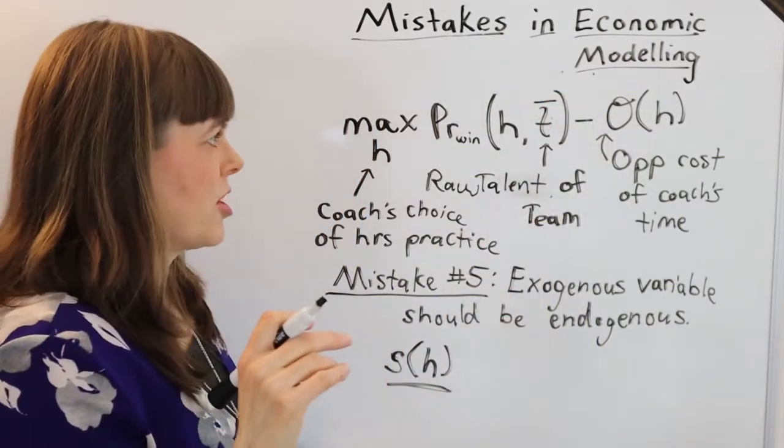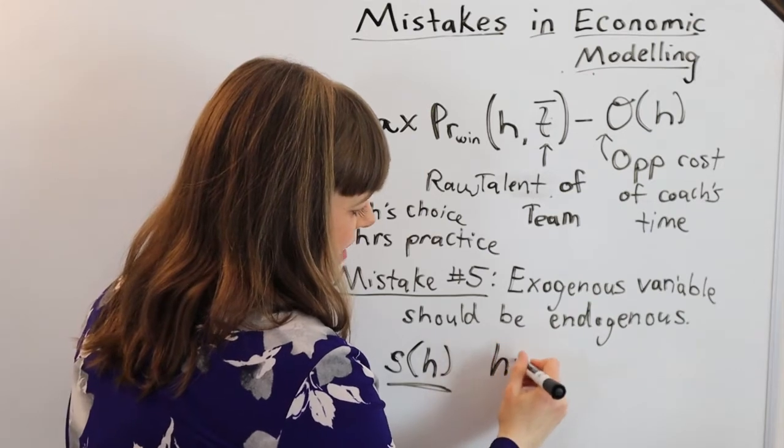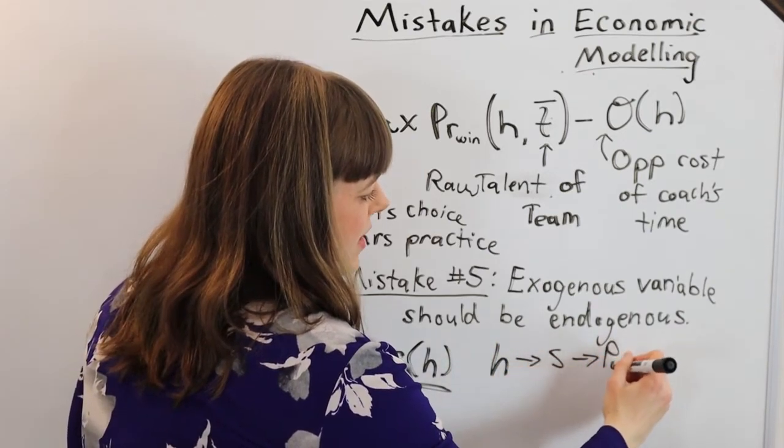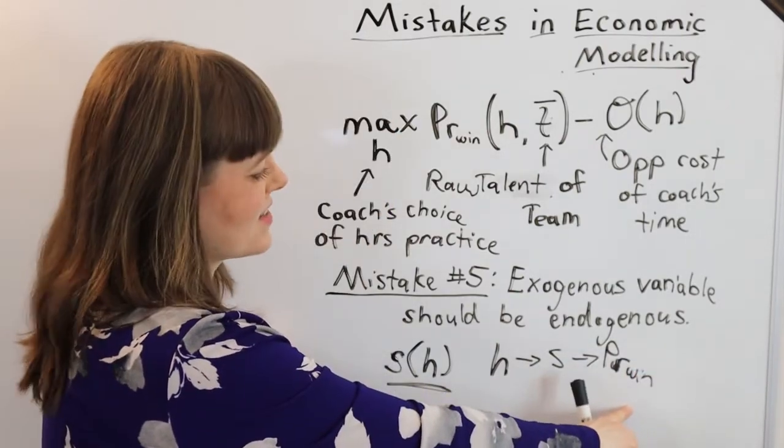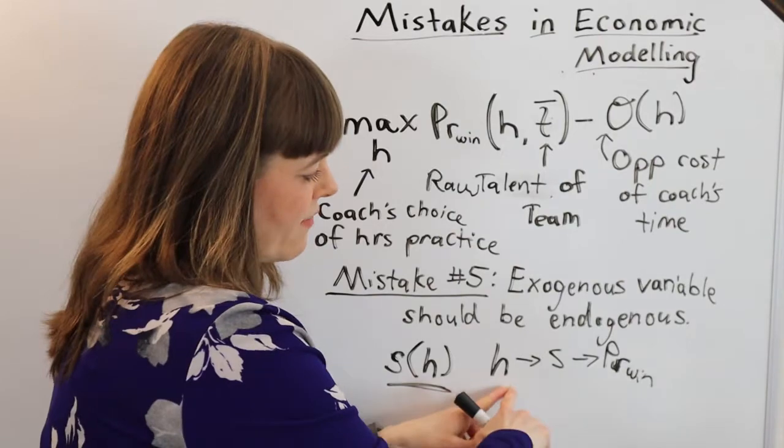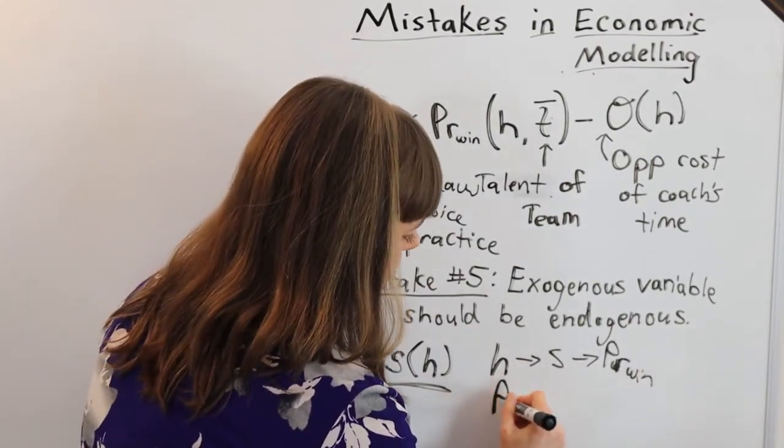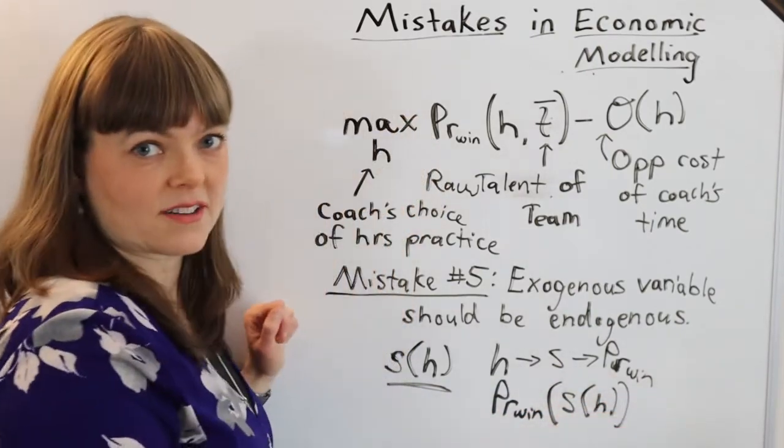Another solution could be, wait a second, we believe that hours of practice influence skill, which influences the probability of winning. So can we build this chain of causality into the model? And of course when you have a chain of causality like this, you're just going to reverse it. So it'll be probability of winning is a function of skill, which is a function of how many hours you practice.